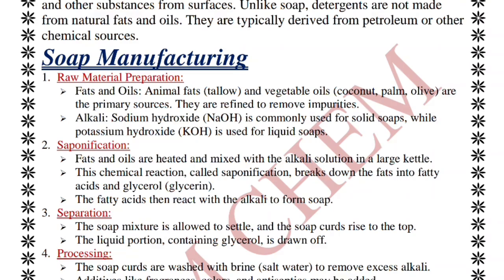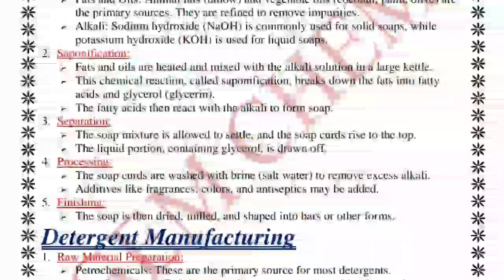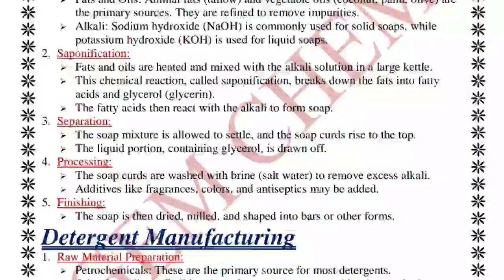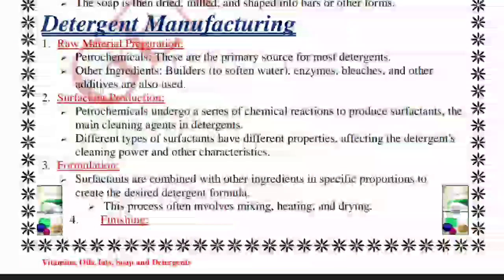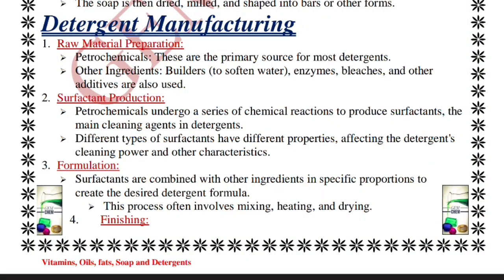The soap mixture is allowed to settle; soap curds rise to the top while the liquid portion containing glycerol is drawn off. The soap curd is washed with salt water to remove excess alkali, then fragrances, colors, and antiseptics are added. The soap is dried, milled, and shaped into bars. For detergent manufacturing, raw materials are petrochemicals combined with builders, enzymes, bleaches, and other additives.